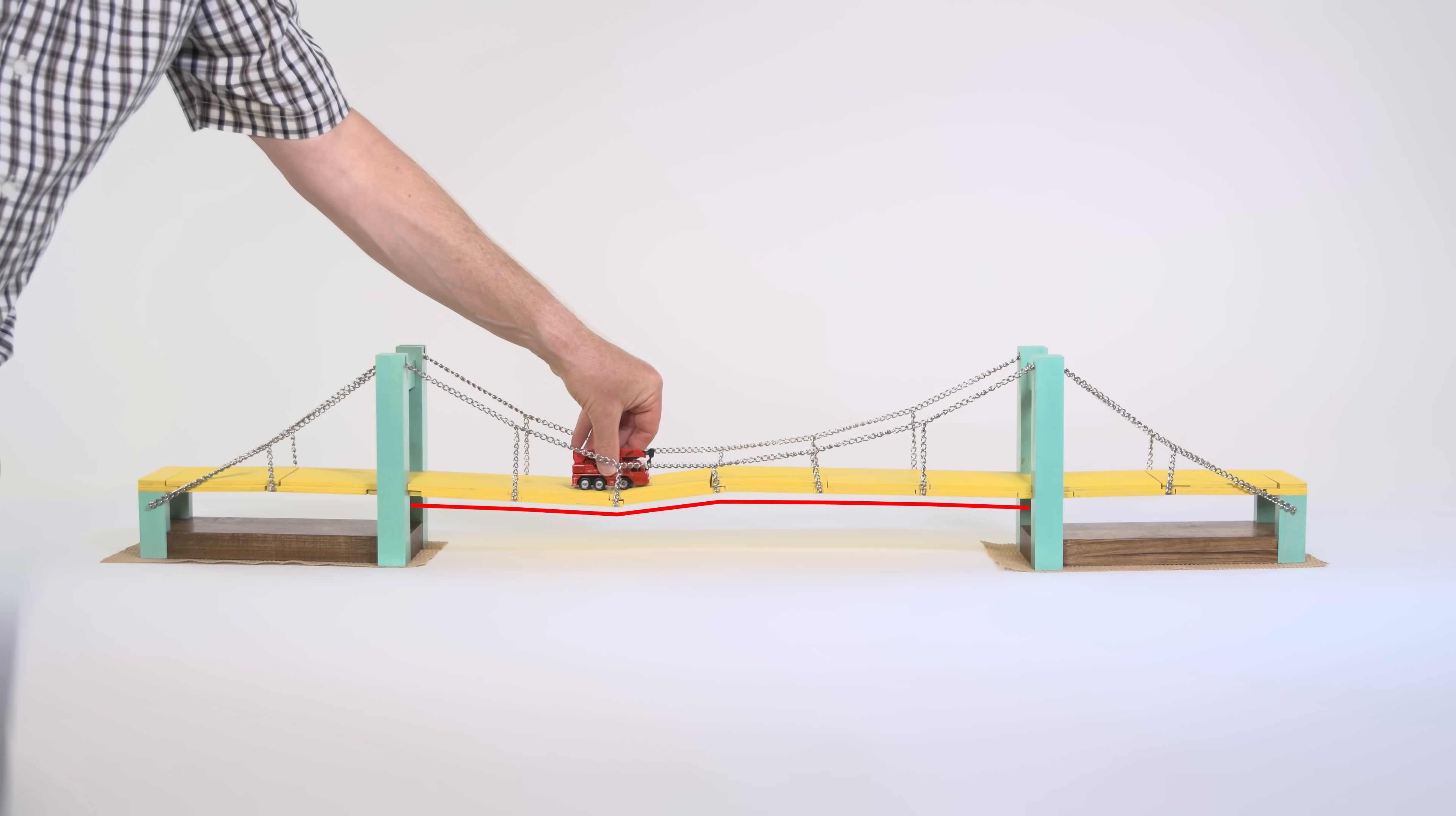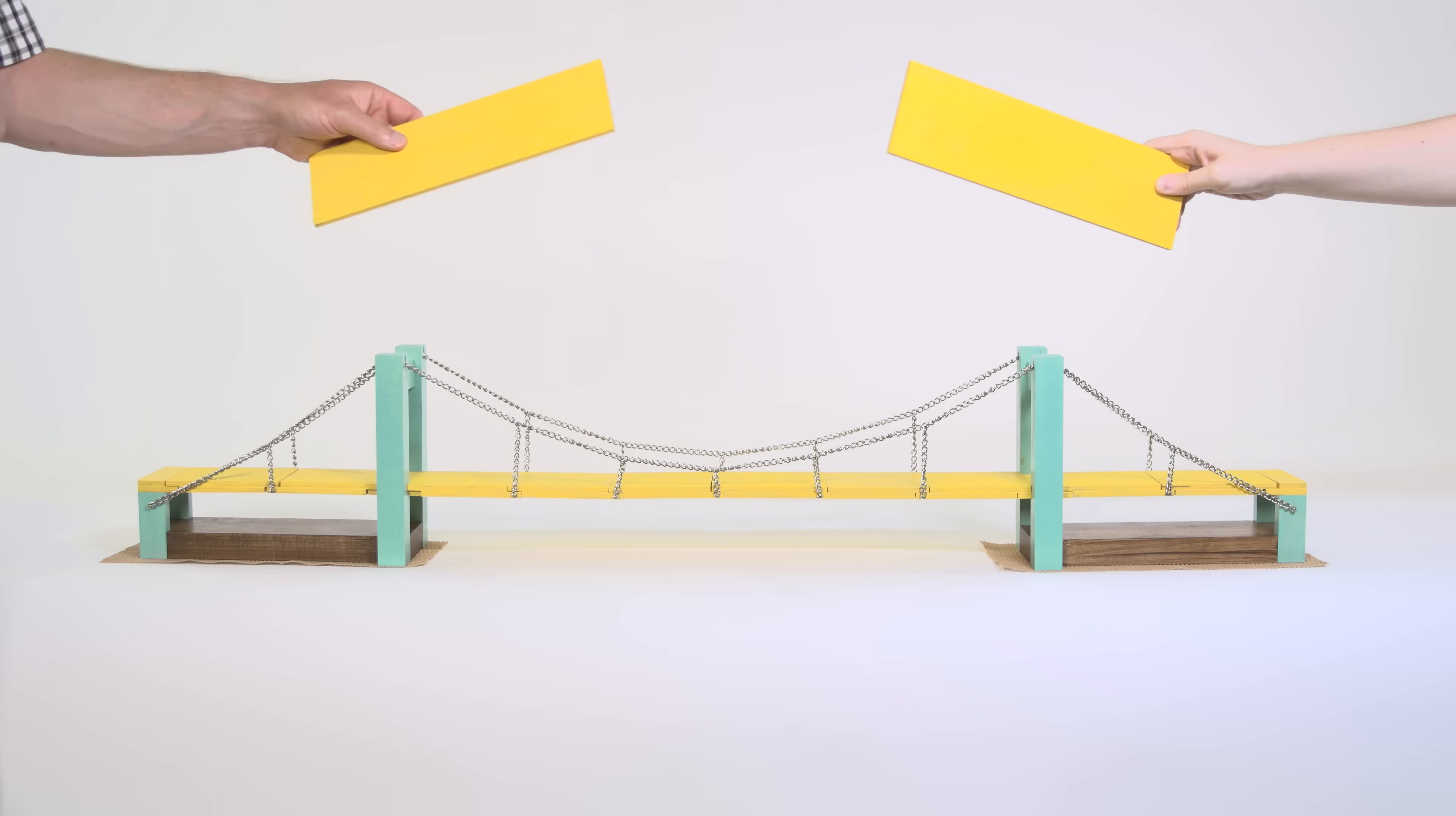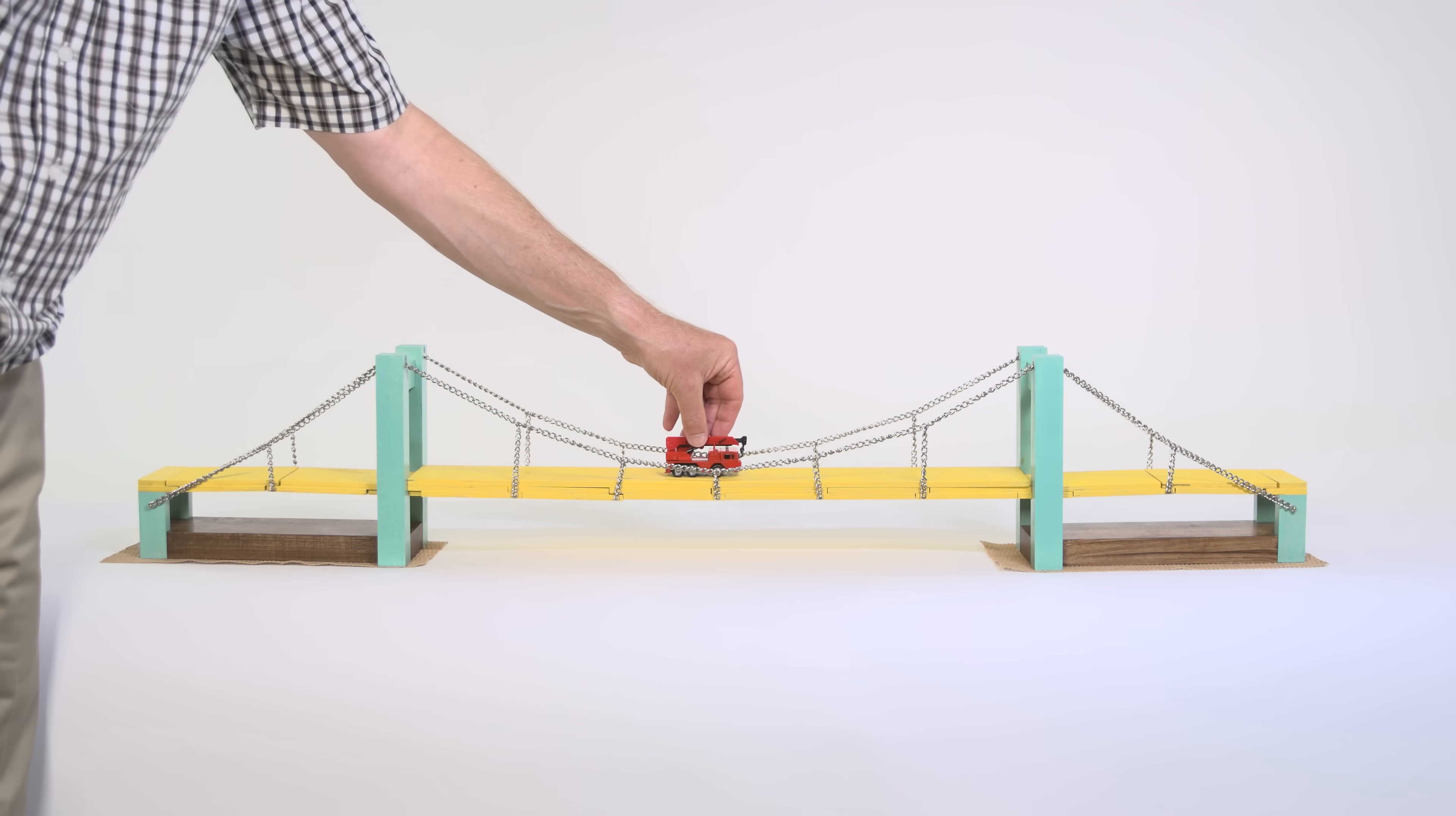The model also demonstrates some of the deflection issues that can arise if a deck is too flexible. Indeed, one of the most famous suspension bridges to collapse was the Tacoma Narrows Bridge, and that failure could have been prevented if a less flexible deck had been used. We can reduce the flexibility of the model deck by adding these panels, and doing so solves the excessive deflection problem.